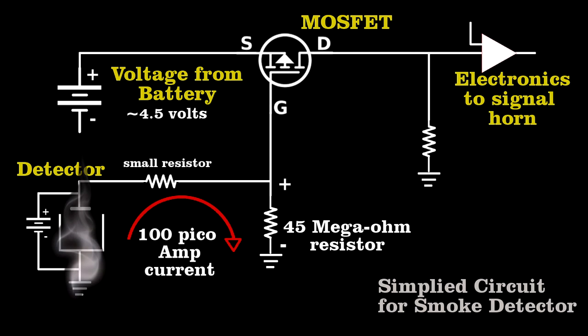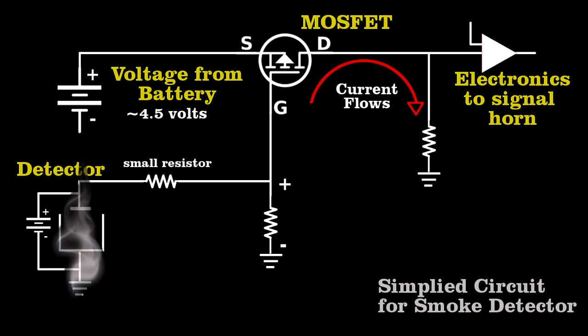If smoke enters the chamber, the tiny current stops. The MOSFET allows current to flow in this section of the circuit, which triggers the horn.